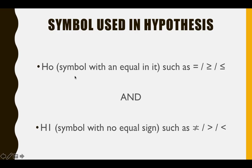For H0 or Null Hypothesis, symbols used always include an equal sign — such as equal to, greater than or equal to, or less than or equal to. Whereas for the alternate hypothesis H1, the symbols used have no equal sign — such as not equal to, greater than, or less than. Notice the difference between the symbols used in H1 and in H0. This is very important.